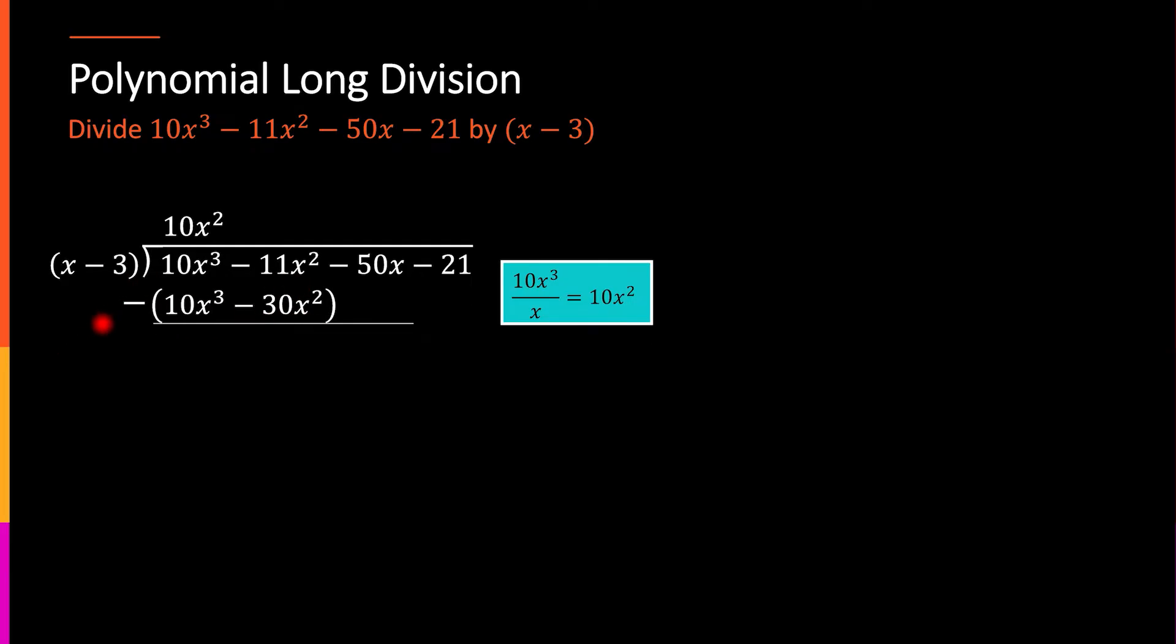Now, as a comment, you can do this just by subtracting, if you're comfortable with that. Another thing that people often do, teach their own, whatever works for you, both perfectly valid, is to distribute the negative sign and then add down. So, you could distribute the negative sign and add, which means that both signs in this case flip, so I have negative 10x³ and positive 30x² and then add straight down.